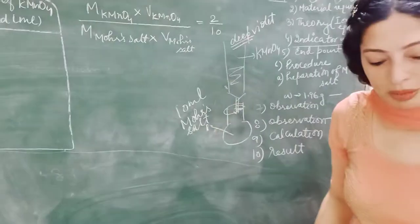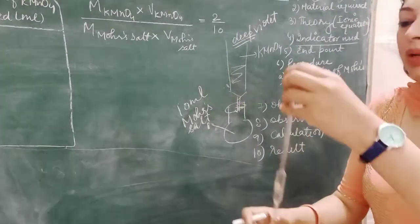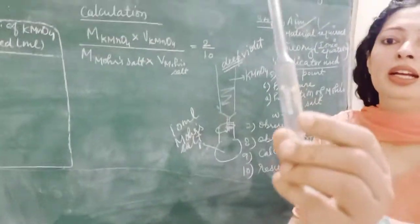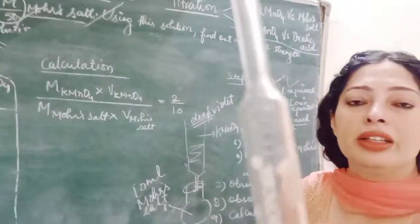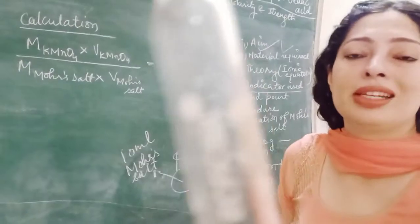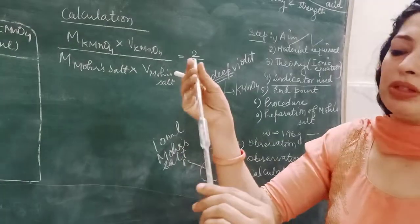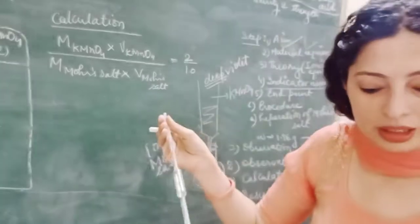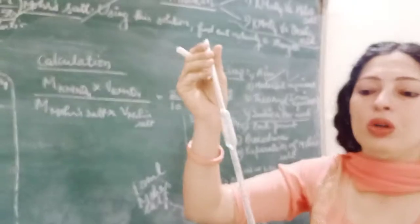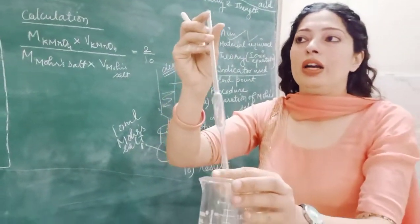In this flask, we will add 10 ml of Mohr salt, which we will pipette out with the help of a pipette. You will use a 10 ml pipette to add the Mohr salt into the conical flask.